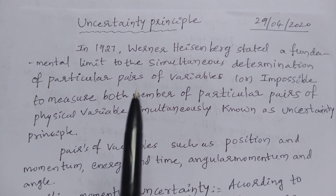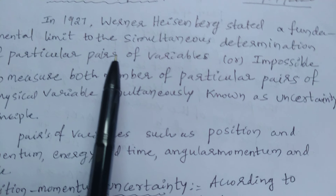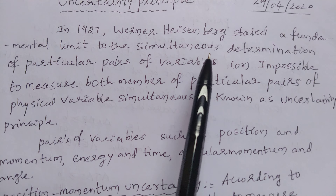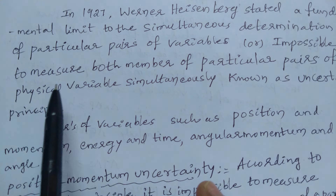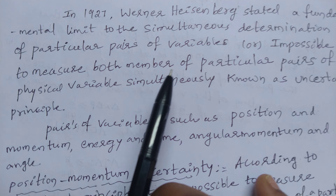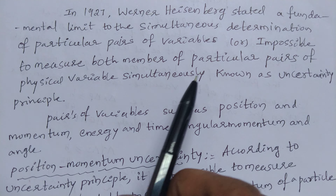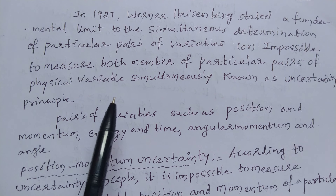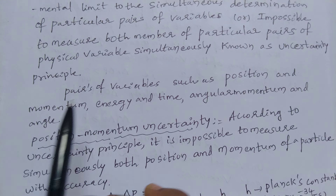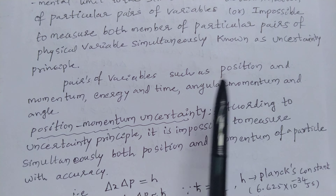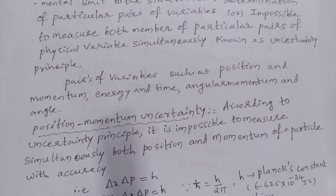Students, now we shall discuss about the topic that is Uncertainty Principle. In 1927, Werner Heisenberg stated a fundamental limit to the simultaneous determination of particular pairs of variables, or it is impossible to measure both members of particular pairs of physical variables simultaneously, known as Uncertainty Principle. Pairs of variables include position and momentum, energy and time, and angular momentum and angle.